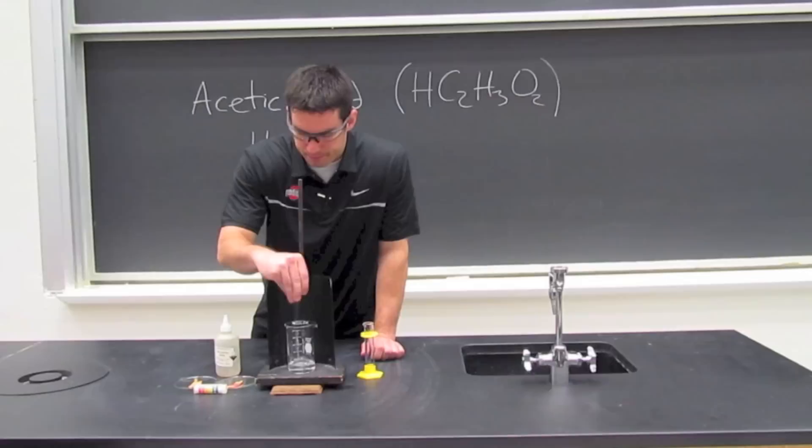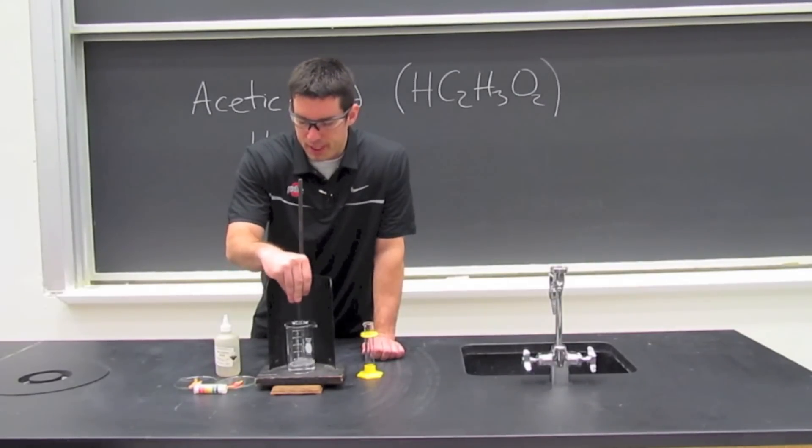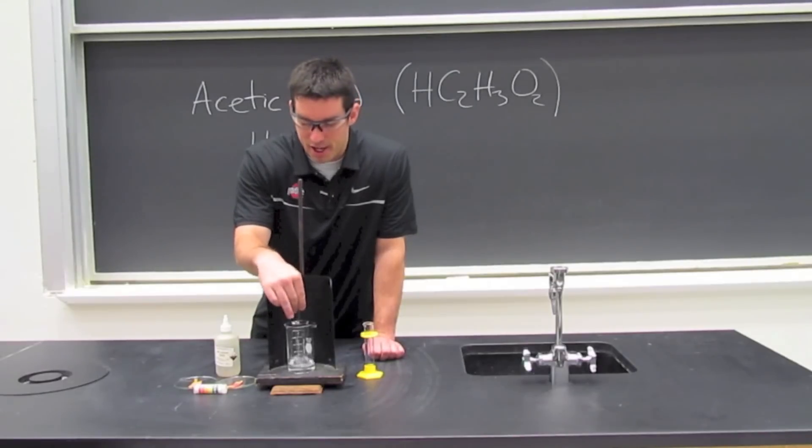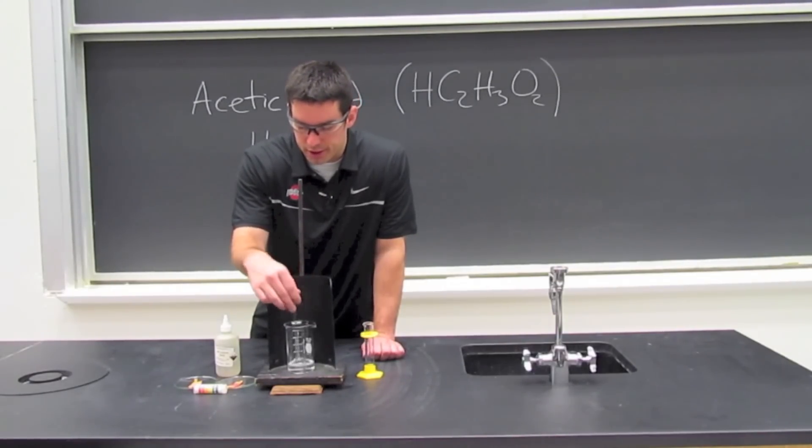We'll mix this up a bit here. And what we now want to do is measure the pH, which will enable us to see how the concentration of hydrogen ions changes when we add water to acetic acid.